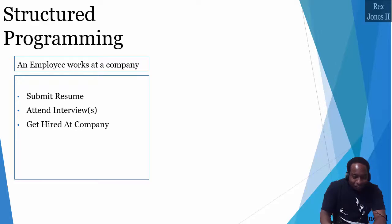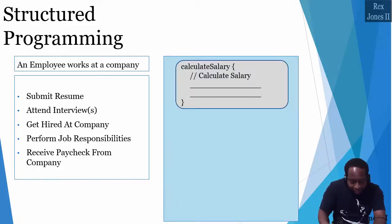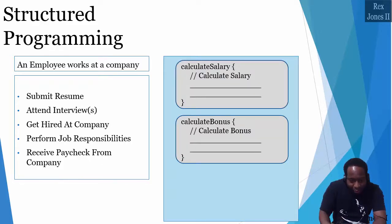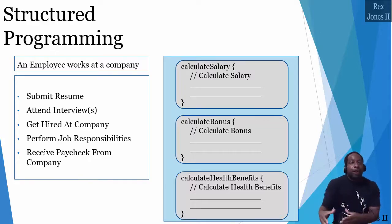gets hired at the company, perform their job responsibilities, then receive a paycheck. The big program is divided into small units such as calculate salary, calculate bonus, and calculate health benefits. That's what we call code acting on data.